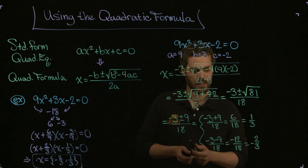Are they the same? Negative 2 thirds, 1 third, indeed they are. All right. So let me show you more examples in the next video of using the quadratic formula.